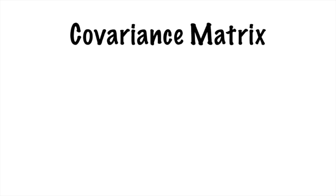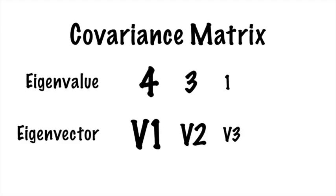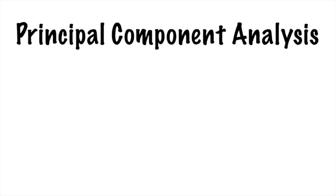Say we find the eigenvalues of a covariance matrix, and they are 4, 3, and 1. As I mentioned earlier, eigenvalues indicate the importance of certain behaviors in a system. So if we remove the smallest eigenpair, the first two will still describe the data pretty well. This process of choosing eigenvectors of a covariance matrix based on their eigenvalues is part of principal component analysis.